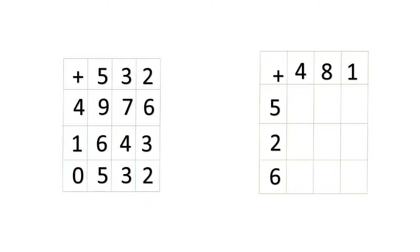Did you understand, children? Let's try one more. We will go to the next box. On the top we see numbers four, eight, and one. And to the left side we see number five, number two, and number six. We will take number five first and add that with all the numbers on the top. So tell me how much is five plus four? It is nine.